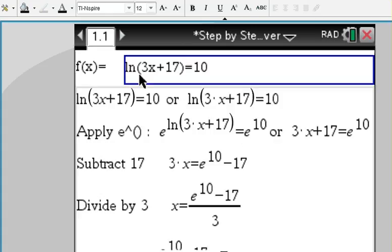Well, what are we supposed to do first? Apply e, correct—on both sides, exponentiate both sides. So e and ln cancel each other out, so we end up with 3x plus 17 on the left side and e raised to the 10 on the right side.